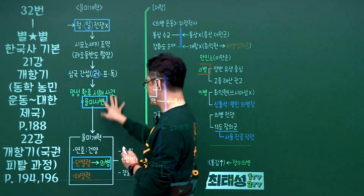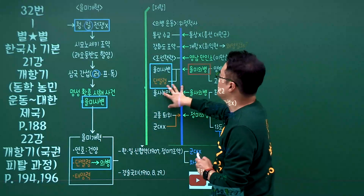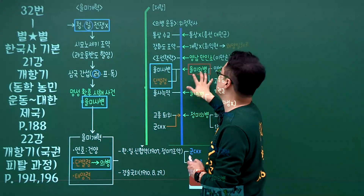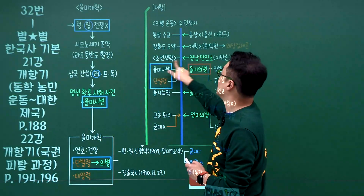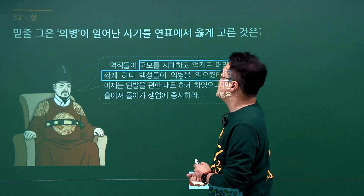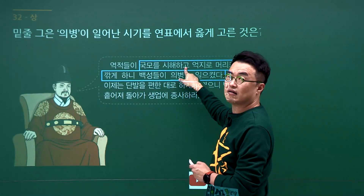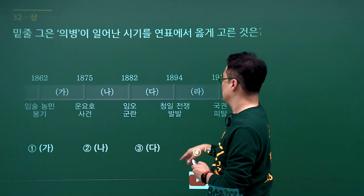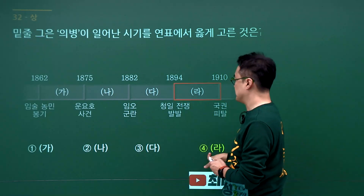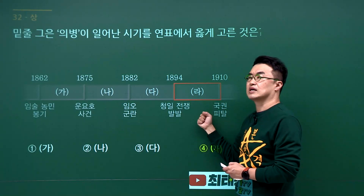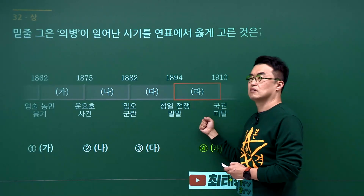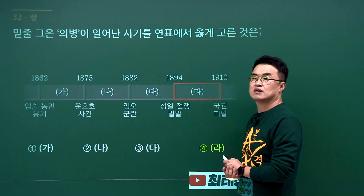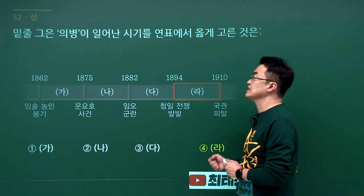을미의병 문제입니다. 청일전쟁, 을미사변, 단발령이 일어났을 때 을미의병이 일어났습니다. 문제에서 국모 시해 사건인 명성황후 시해 사건이 나왔으니 이 시기에 일어난 것을 골라야 합니다. 청일전쟁 발발, 시모노세키 조약 체결 이후 일본이 을미사변을 일으키자 그에 대한 저항으로 을미의병이 벌어집니다. 정답은 4번입니다.